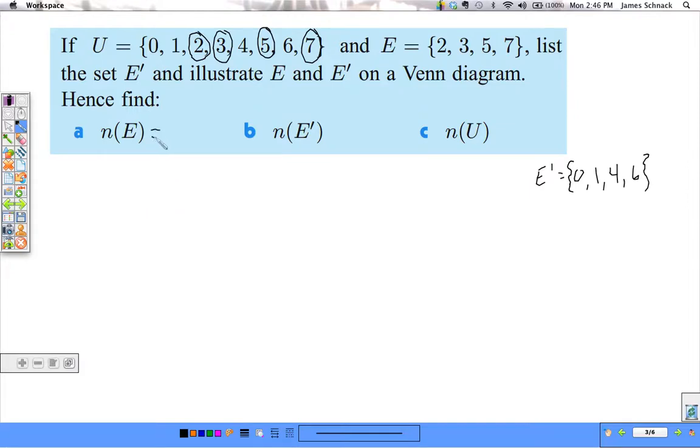And we actually have enough information now to write the answers to A, B, and C. Number of elements in E is 1, 2, 3, 4. Number of elements not in E, the complement of E, is 4. And the number of elements in our universal set, there are 8 of them.